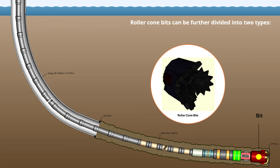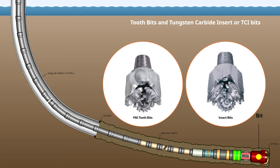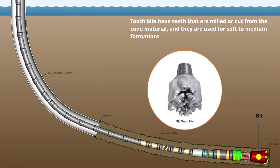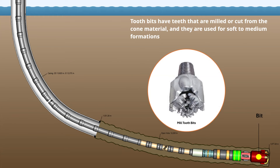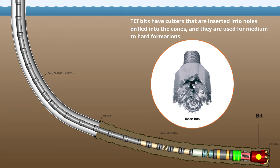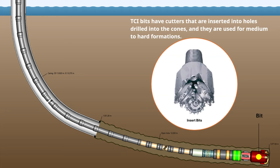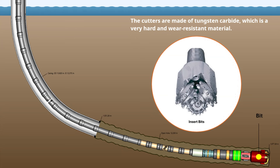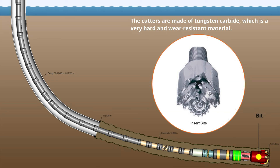Roller cone bits can be further divided into two types: tooth bits and tungsten carbide insert (TCI) bits. Tooth bits have teeth milled or cut from the cone material and are used for soft to medium formations. TCI bits have cutters inserted into holes drilled into the cones and are used for medium to hard formations. The cutters are made of tungsten carbide, a very hard and wear-resistant material.